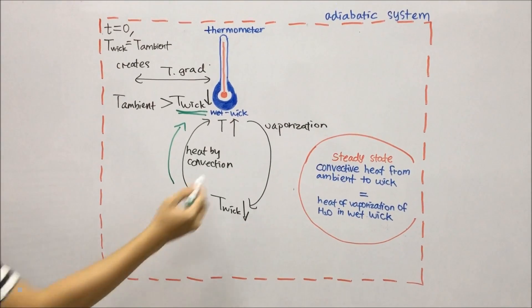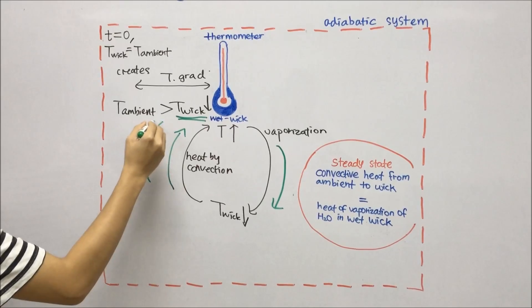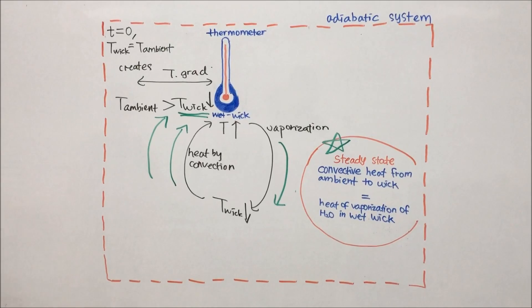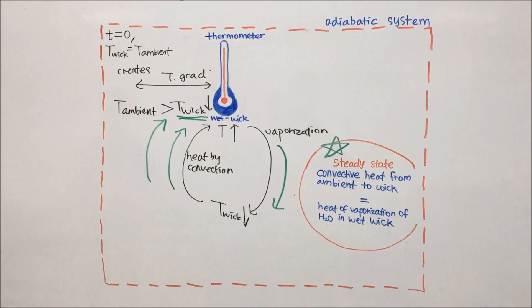This cycle repeats until a steady state is reached. At steady state, the heat of vaporization of the moisture content is equal to the convection heat transfer from ambient to moisture content in the wick.